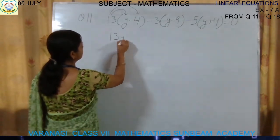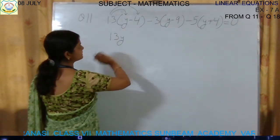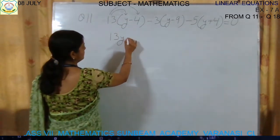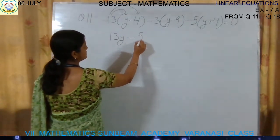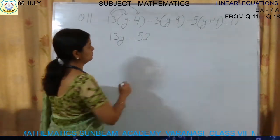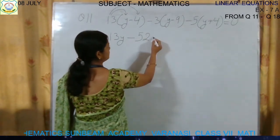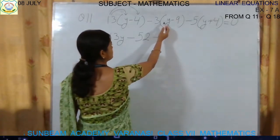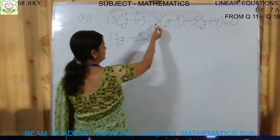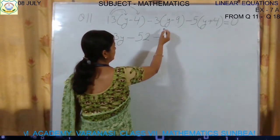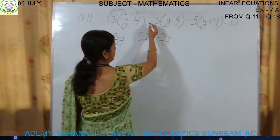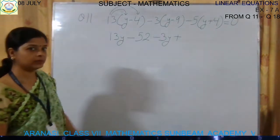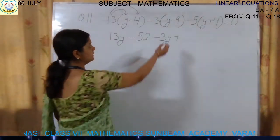13 into y. Now 13 into minus 4 — plus times minus gives minus. 13 fours are 52. Now again: minus times plus gives minus. First put the sign when opening the bracket. Minus times plus gives minus. Now multiply the number: 3, and no number means 1, so 3 ones are 3. Write down the variable y. Again: the sign is minus times minus, which becomes plus. Minus minus becomes plus. 9 threes are 27.